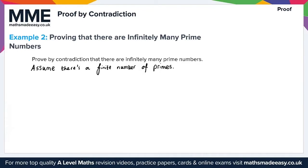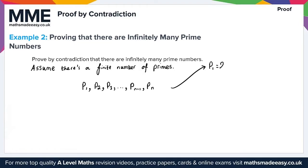If there's a finite number of primes, we could denote the full set of primes as P1, P2, P3, all the way up to P(n−1) and finally Pn, where Pn represents the largest prime number. So P1 equals 2, the first prime, and Pn is the largest prime.